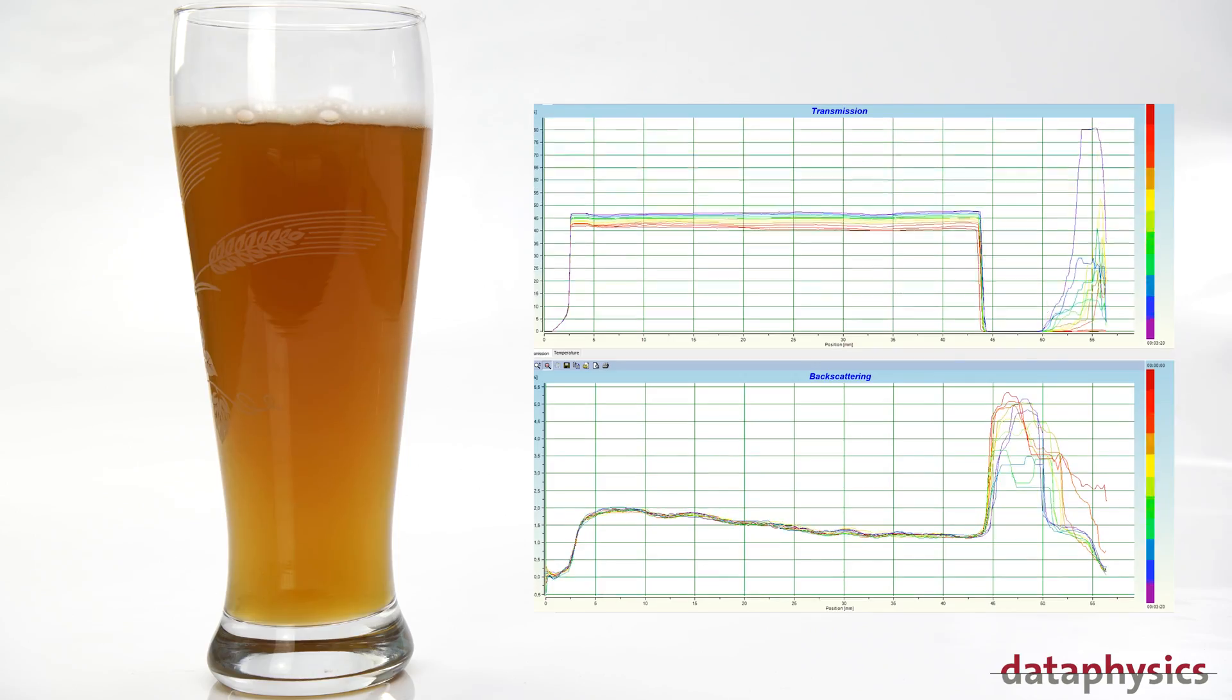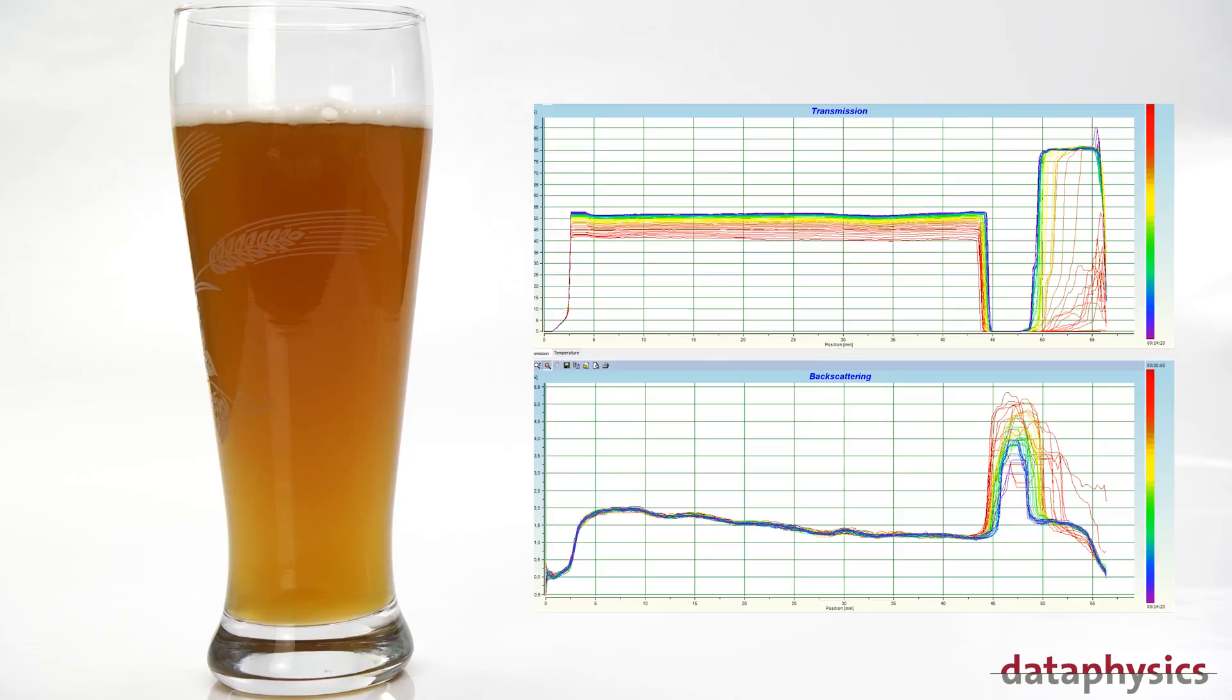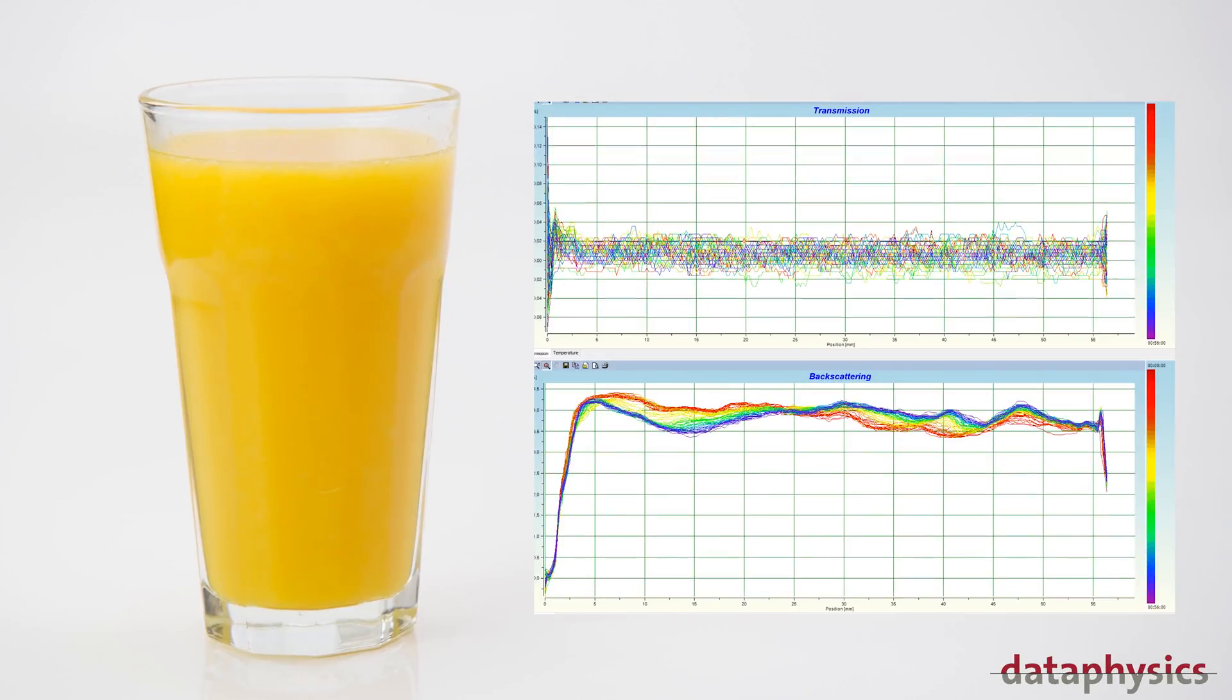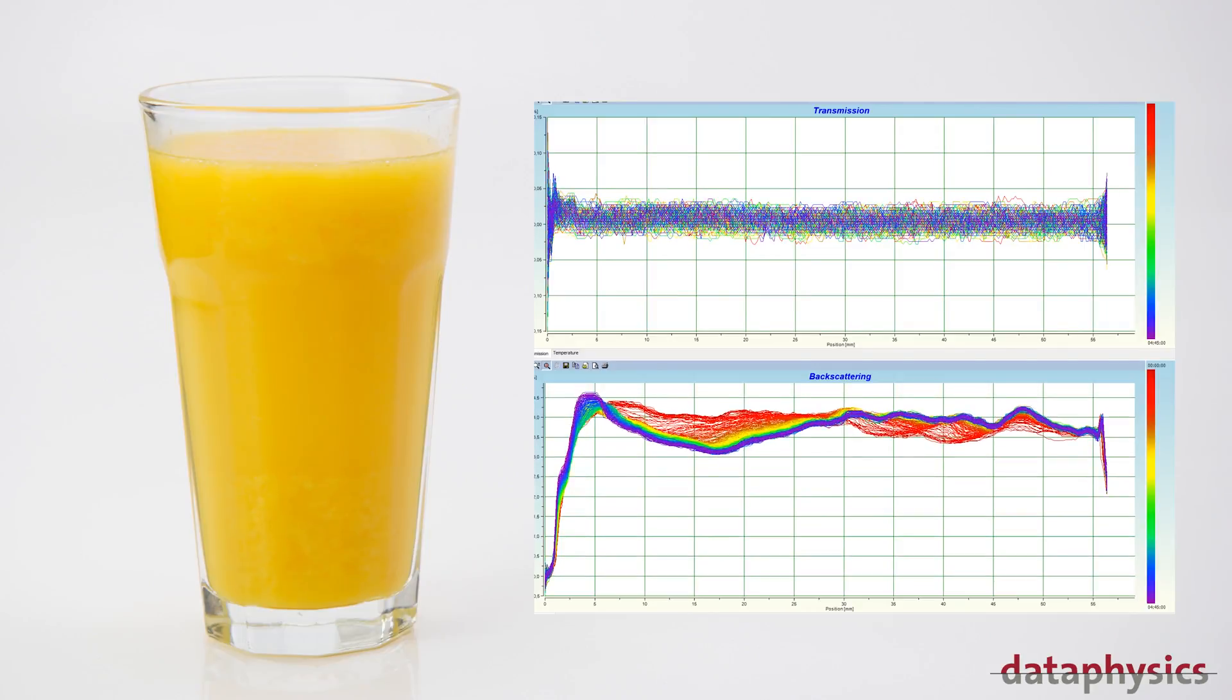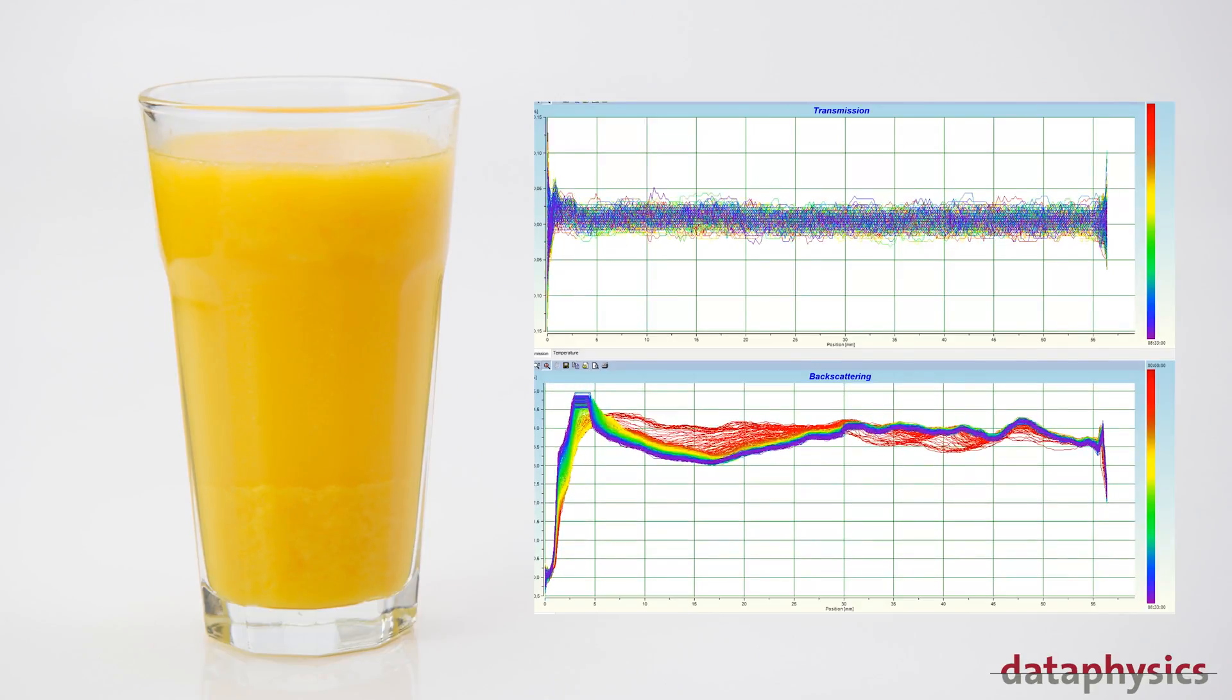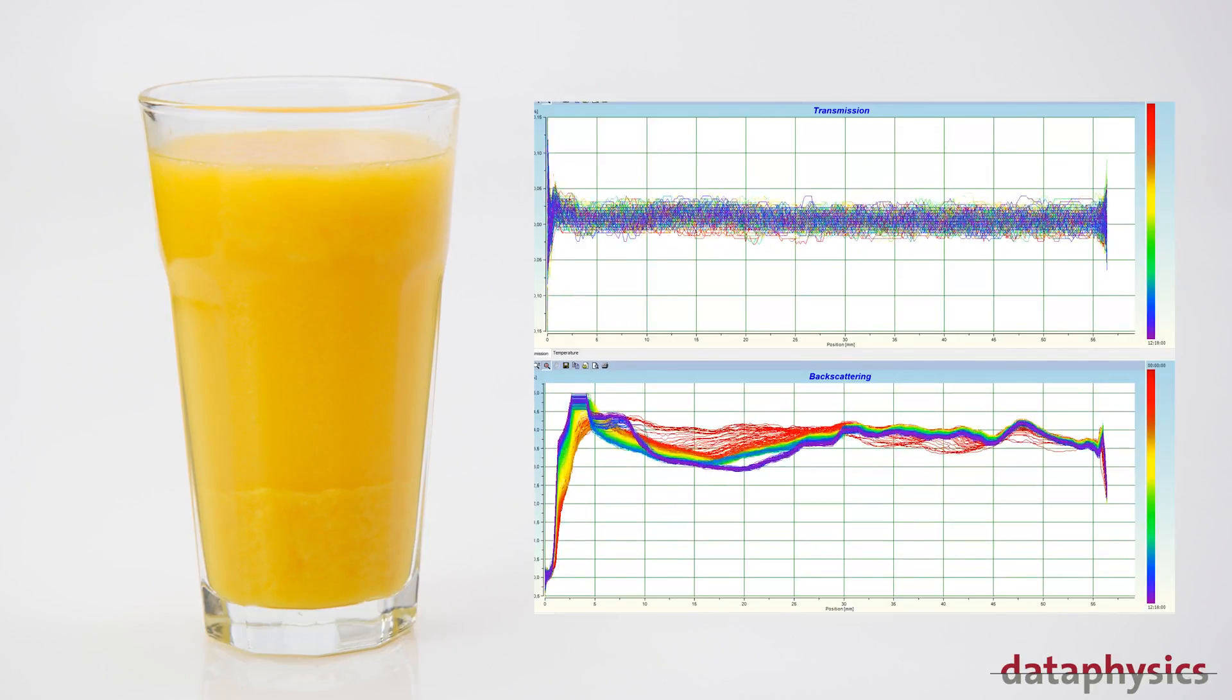Thanks to the MultiScan MS20, you are only a few clicks away from recognizing and quantifying unstable processes such as coalescence, coagulation, flocculation, sedimentation, and creaming. The intuitive software of the MultiScan MS20 will deliver real-time information on transmission and backscattering signals.